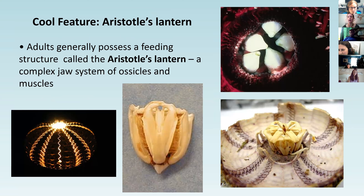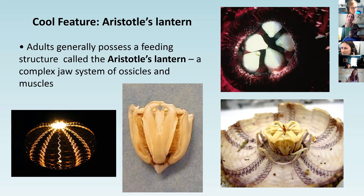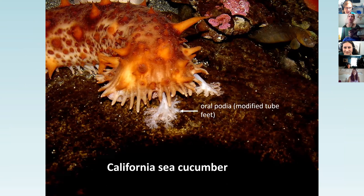Urchins have a really interesting mouth called Aristotle's lantern, named after the philosopher. It's a pretty complex jaw system of ossicles and muscles that allows them to graze a ton. In kelp forests here in California, if urchin populations get too high it reduces kelp, which is not great because these guys can eat a ton of kelp if not kept in check by fish and predators.